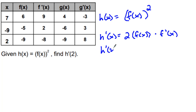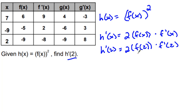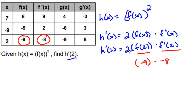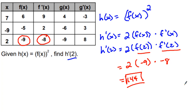And I want to know what h prime of 2 is. So I'm going to plug in a 2 everywhere I see an x. Now I can go to my table — f of 2 is equal to negative 9, so this equals negative 9. f prime of 2 is equal to negative 8. Now don't forget, I still have this 2 out here. So I have 2 times negative 9 — that's negative 18 — times negative 8. And that equals 144. And that is my answer using the table.